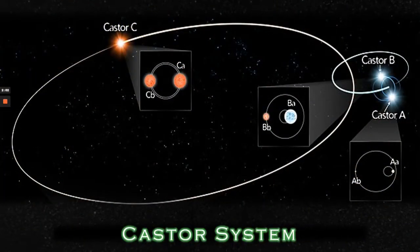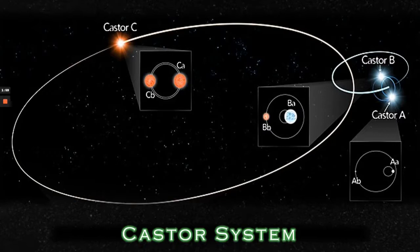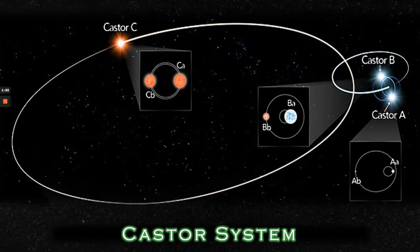Here we see the complicated Castor system. Castor A on the right represents the binary pairing of Castor AA and AB. Castor B represents the binary system of BA and BB.